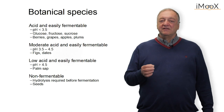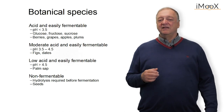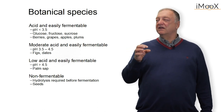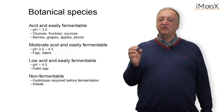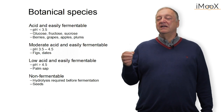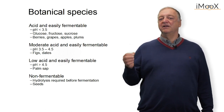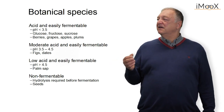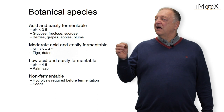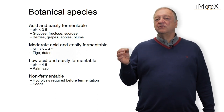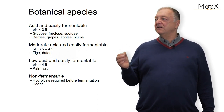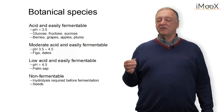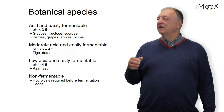We can divide the botanical species for raw materials into groups. The first group has a low pH — they are easier to ferment because they are more stable with fewer competitive organisms present. The pH is low and fructose, glucose, and sucrose are present. These are mainly fruits, berries, grapes, and apples.